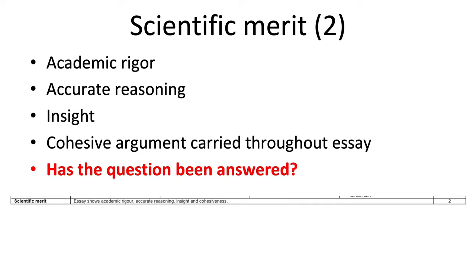Two marks are awarded for scientific merit — basically for academic rigor and accurate reasoning. You should also have a cohesive argument carried throughout the essay. Ultimately, the scientific merit mark is awarded if you've been able to answer the question. If you've just written around the topic without directly answering the question, you won't get these marks, and you also won't get the quality of argument marks.